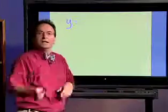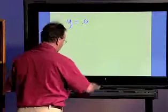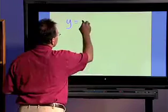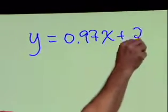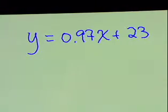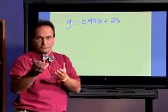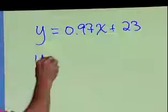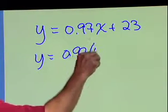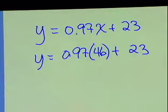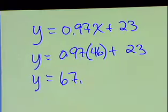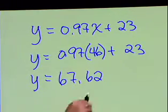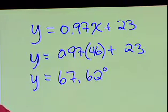The grapher gave us that y was equal to 97 hundredths x plus the y-intercept of 23 degrees. So now what we do is we substitute in the low temperature of 46 for x. So we get y equals 0.97 times 46. And then after we multiply those we add the 23. And what we find is that the temperature is approximately 67 and 62 hundredths degrees for that high temperature in Madison, Wisconsin.